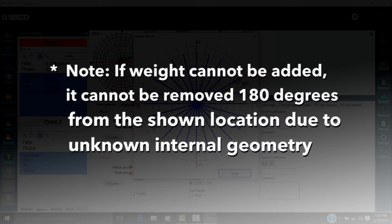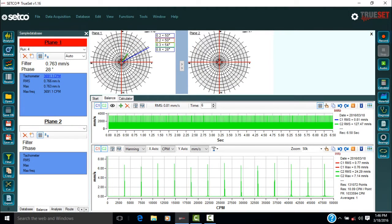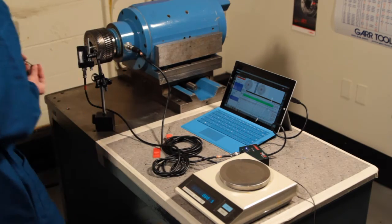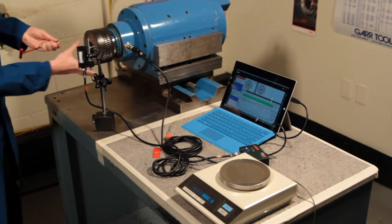Click on the graph to see where to add balancing weight. If weight cannot be added, it cannot be removed 180 degrees from the shown location. Remember to remove the trial weight if desired. The weight must be added or removed in the same rotational radius as the trial weight.